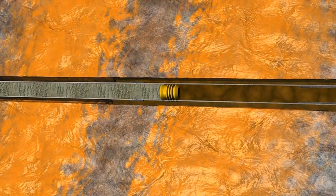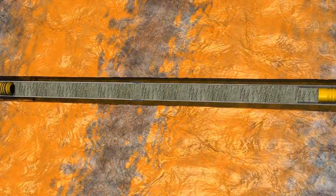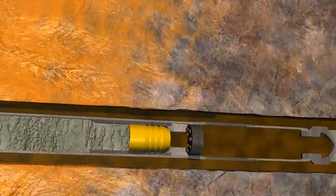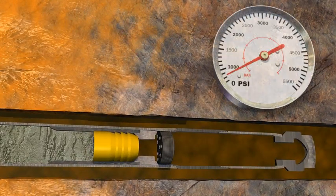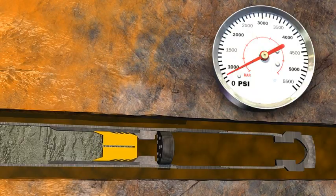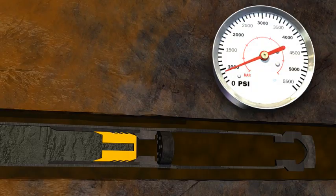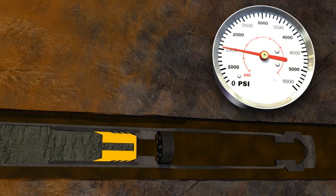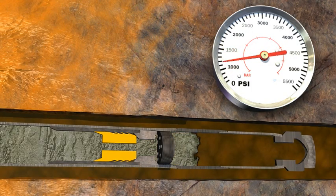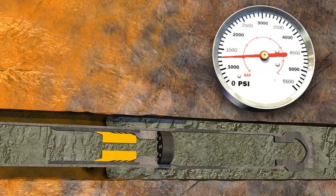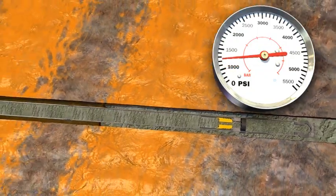Special wiper plugs are used to separate the cement from the displacing fluid and wipe the inner diameter of the liner. The lead plug in front of the cement lands on a baffle plate near the shoe and ruptures to allow cement to be displaced in the annulus. The operator can choose to cement the entire annulus to surface or only a portion. As the cement is circulated up the annulus, the second wiper plug may or may not land out.